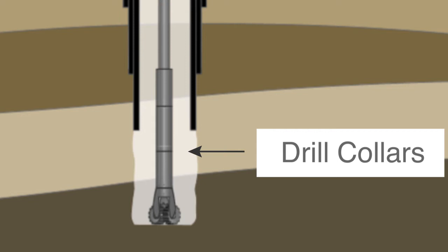Now rotating alone won't get the job done because you need a large amount of force to break through the rocks. Drill collars, which are essentially heavier forms of drill pipe, are used to supply weight on the bit.